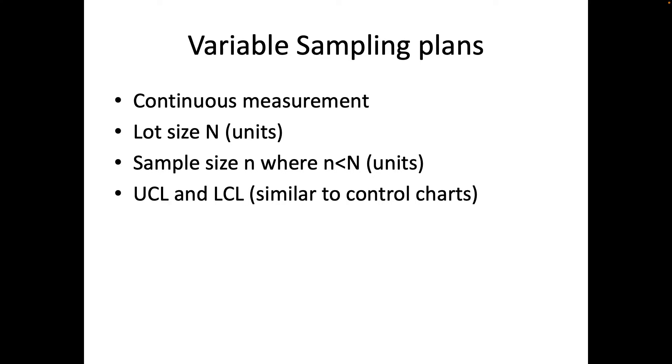In a variable sample we have this same thing but it's a continuous measurement. There's still lot sizes, there's still samples, but what you develop is an upper control limit and a lower control limit. Within this you will accept it and outside of these limits you will reject it. So it sort of becomes an attribute chart.